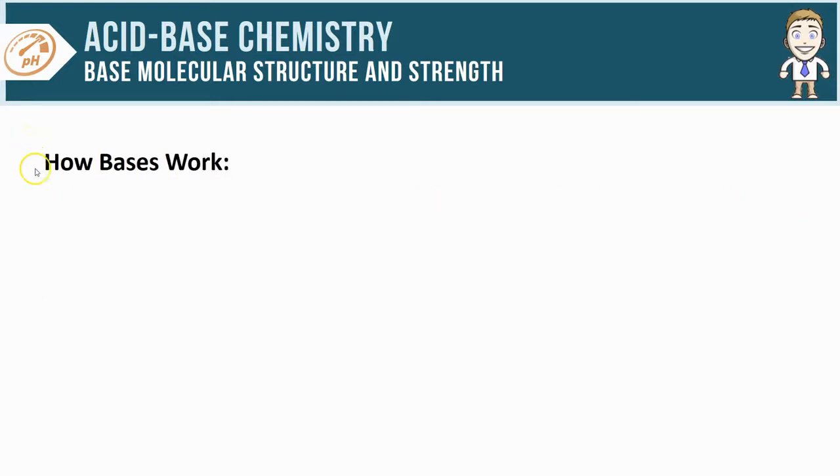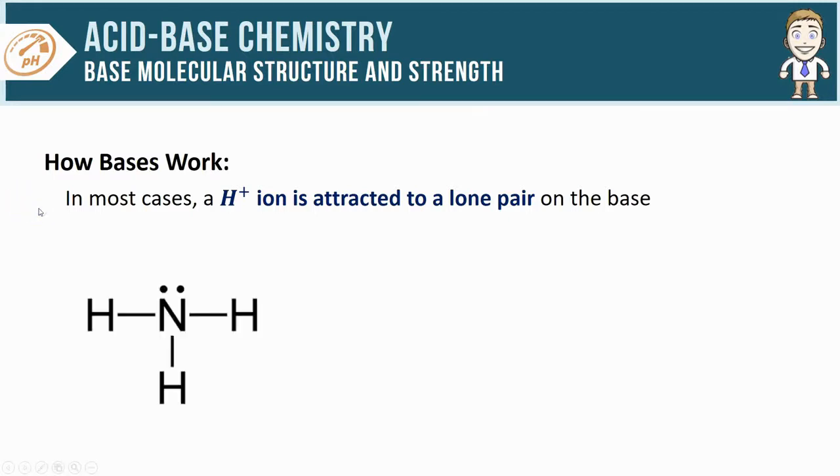We also need to clarify a little bit about how bases actually work. In most cases, that hydroxide ion is going to be attracted to a lone pair that exists within the molecule of the base. A good example of that is our nitrogen containing base ammonia. You can see it has a lone pair on the nitrogen, so my H plus ion is going to be attracted and attached to that lone pair.